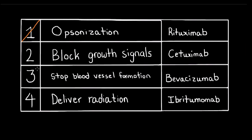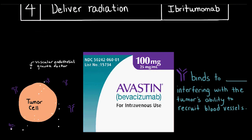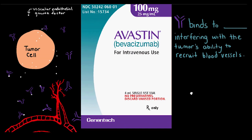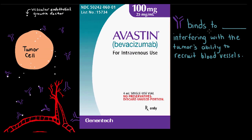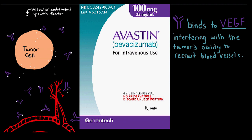Number three: monoclonal antibodies that stop new blood vessels from forming. The drug bevacizumab, trade name Avastin, is a humanized monoclonal antibody FDA-approved to treat brain, colon, kidney, and lung cancers. Tumor cells rely on blood vessels to bring them the oxygen and nutrients they need to grow and propagate. To attract blood vessels, cancer cells release the protein vascular endothelial growth factor, or VEGF. Avastin works by binding to the VEGF protein, blocking the tumor's ability to communicate with nearby blood vessels and interfering with its ability to grow. In tumors with an already established vascular network, blocking these growth signals can cause the blood vessels to die and the tumor to shrink.